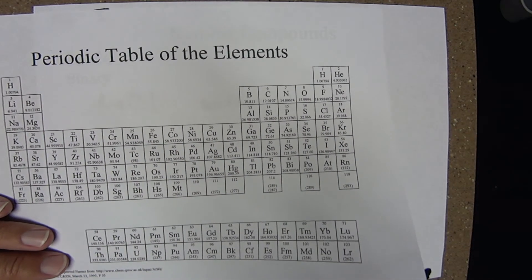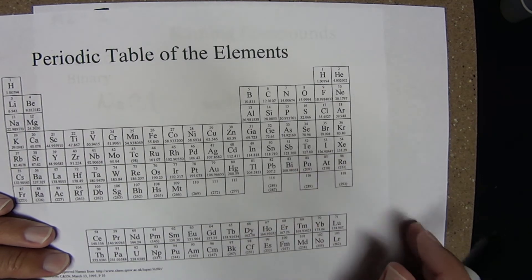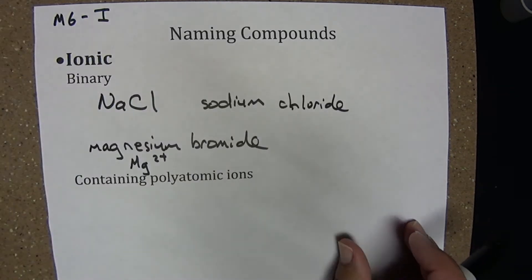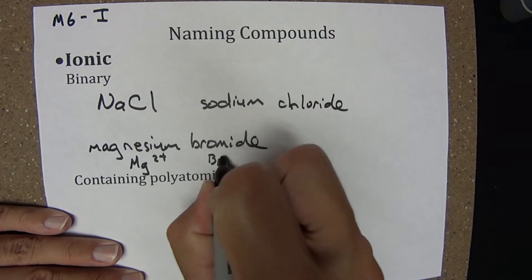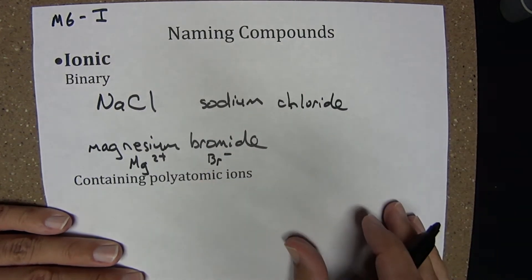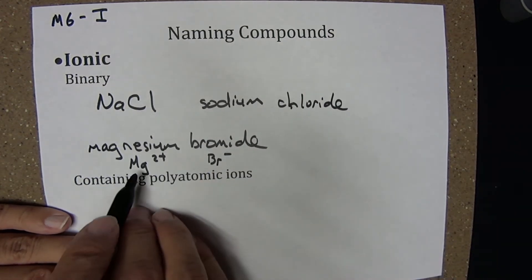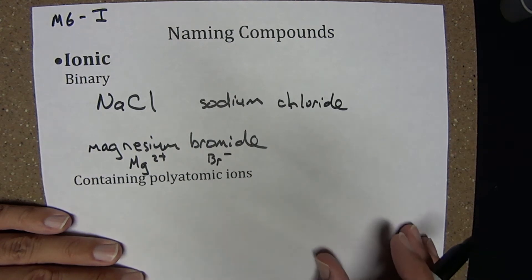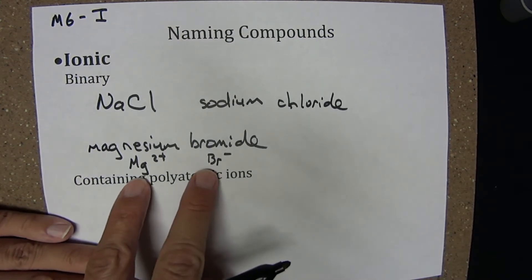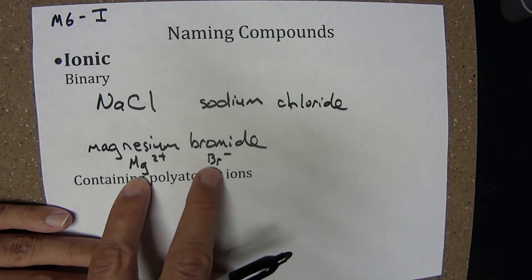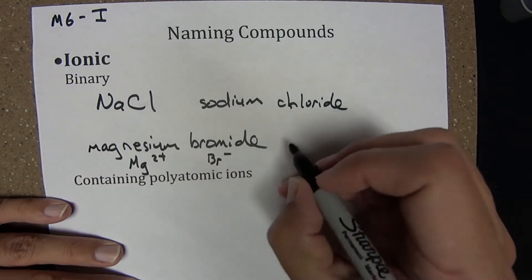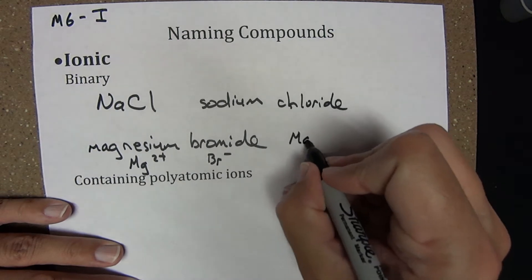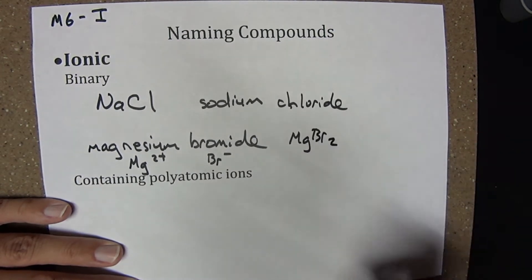Bromine is a halogen in group 7A. As an anion, it will tend to have a −1 charge. Compounds must be net neutral — as much positive character as there is negative. To make a net neutral compound from these component parts, I need twice as many bromide as I have magnesium. Therefore, the chemical formula is MgBr₂.